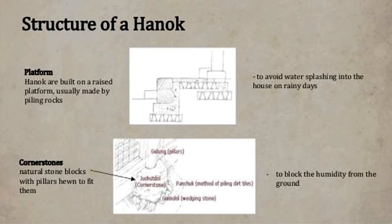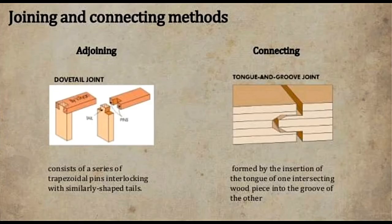Joining and connecting methods in hanok: the dovetail joint, used in joining joints of timber or wood, consists of a series of trapezoidal pins interlocking with similarly shaped tails. In connecting, the tongue-and-groove joint is formed by the insertion of the tongue of one intersecting wood piece into the groove of the other.